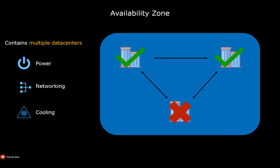An example of this is zone redundant storage, where Azure automatically copies your data synchronously across three availability zones in the primary region.